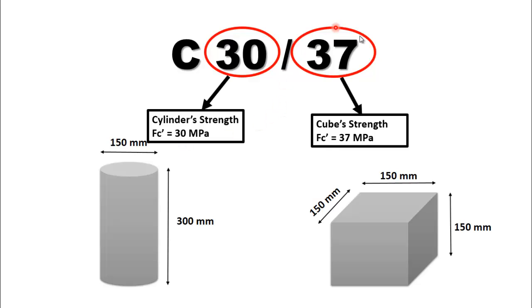So we have concluded that C represents concrete, the first value represents the cylinder crushing strength, and the second value represents the cube crushing strength. That was all for today. For more interesting videos like this, please keep in touch.